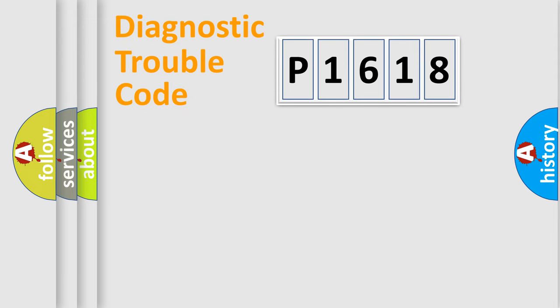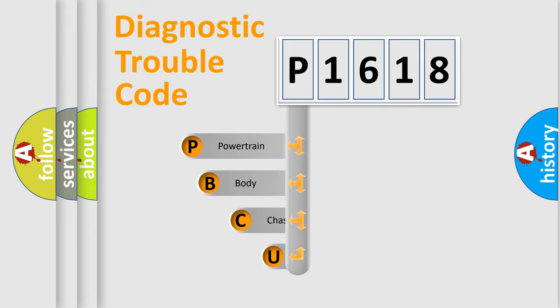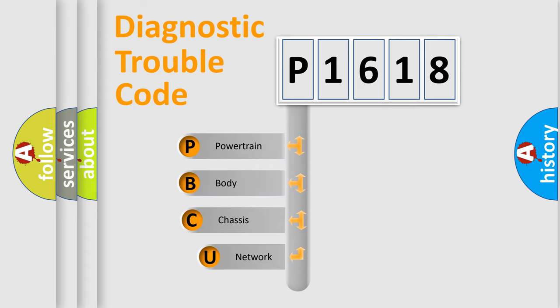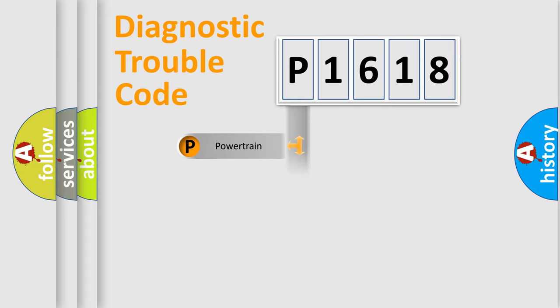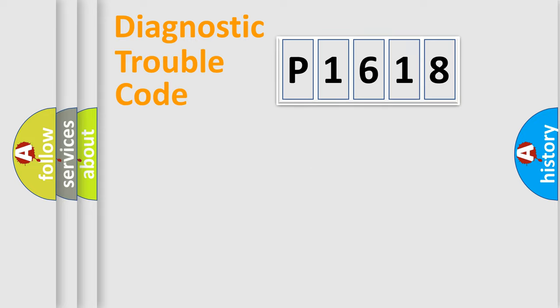Let's do this. First, let's look at the history of diagnostic fault code composition according to the OBD2 protocol, which is unified for all automakers since 2000. We divide the electric system of an automobile into four basic units: Powertrain, Body, Chassis, and Network.